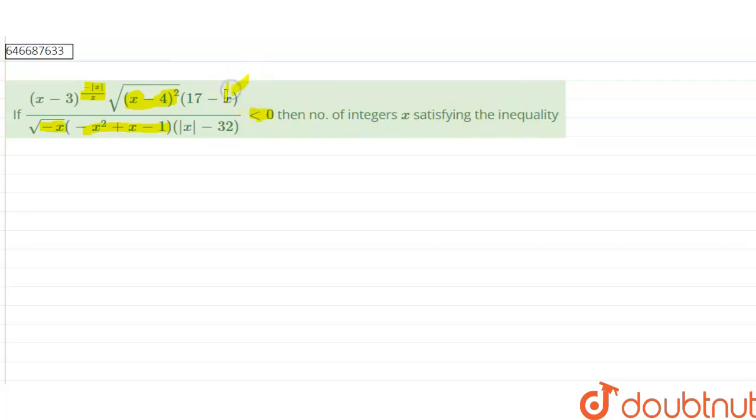What we will do here is, if we need the number of integers, it means that we need maximum numbers that will satisfy the inequality.